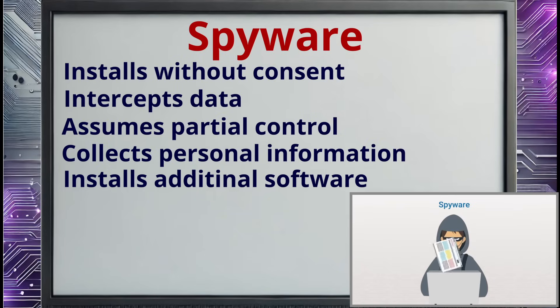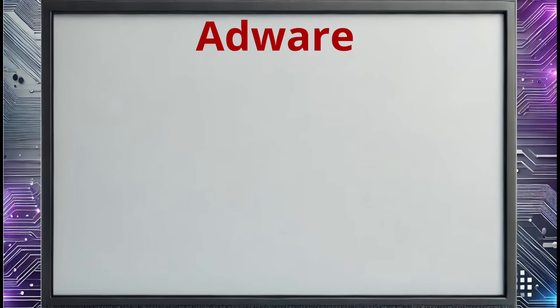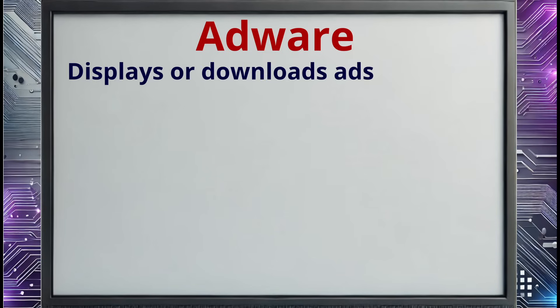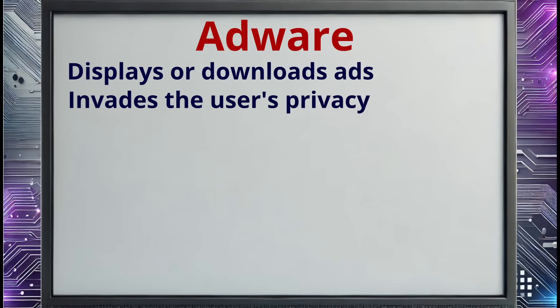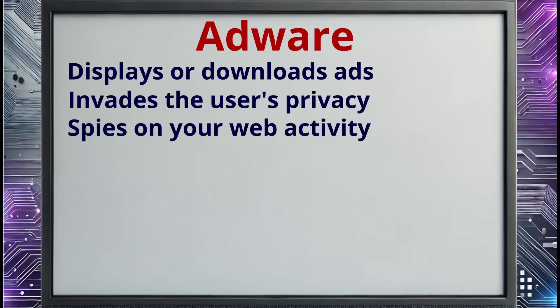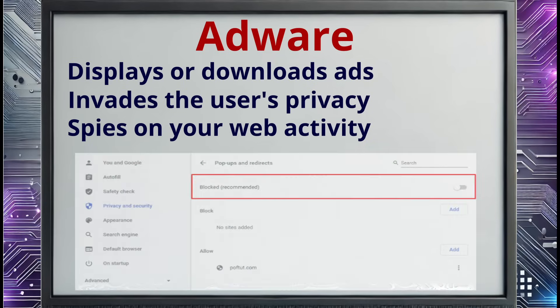Related to spyware is another type of malware called adware. Adware automatically plays, displays, or downloads advertisements to the user's computer. In fact, adware commonly incorporates the same functions as most spyware packages. Both types of malware invade the user's privacy. Adware usually spies on your web activity and then displays advertisements based on your browsing history. Your best defense against spyware and adware are a pop-up blocker and anti-malware software.